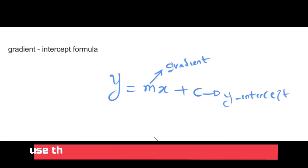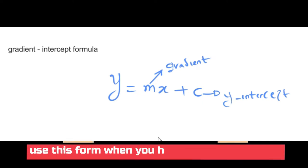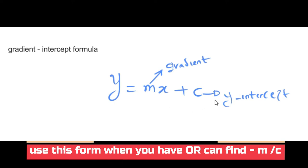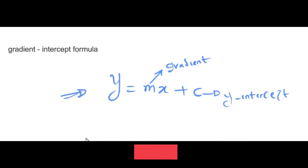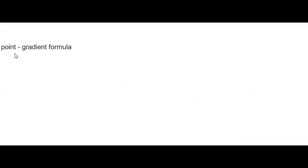Whenever you have a question where you are given your gradient and you can find or are given your y-intercept, you normally use the gradient-intercept format to get the equation of a straight line. The second form is the point-gradient formula.